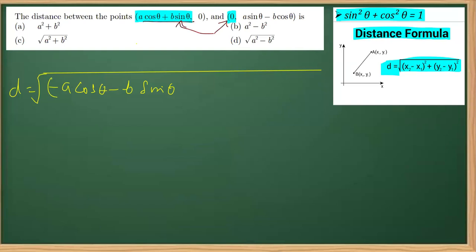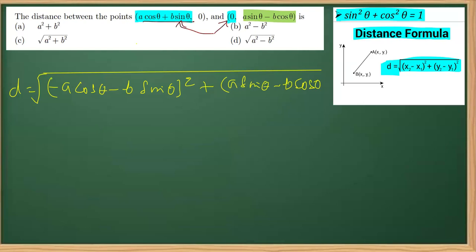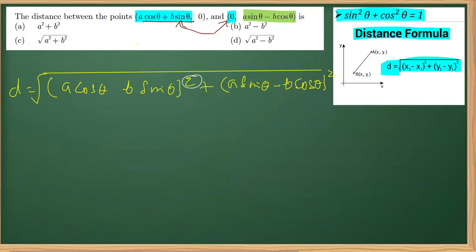So, x2 minus x1 whole square, plus y2 minus y1 whole square. y2 is a sinθ − b cosθ, so y2 minus y1 whole square is (a sinθ − b cosθ − 0)². Now, since we have a minus sign and a square over it, the minus becomes positive. So (x2 - x1)² becomes (a cosθ + b sinθ)².